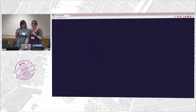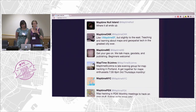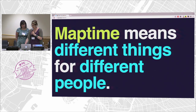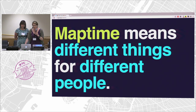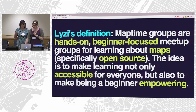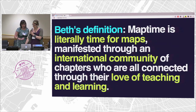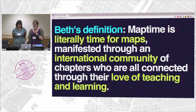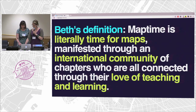Rainbows. Watercolor. These are all different chapters — none of them are repeating. This is all different people. Map time means different things to different people. My definition is that MapTime is literally time for maps, manifested through an international community of chapters who are all connected through their love of teaching and learning.